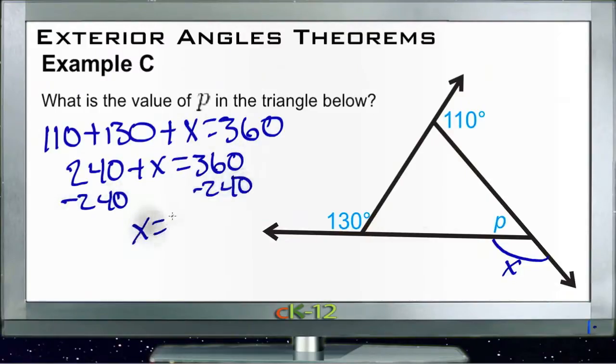So if x is 120 and it's a linear pair with p, then p must equal 60 degrees. And there we go.